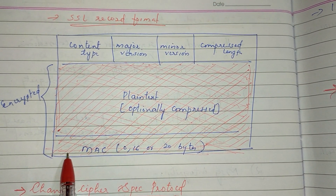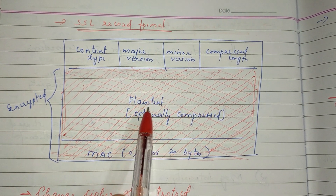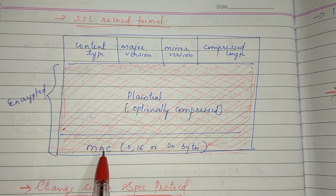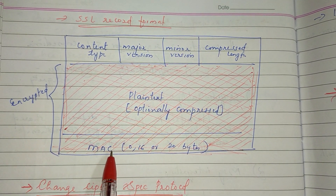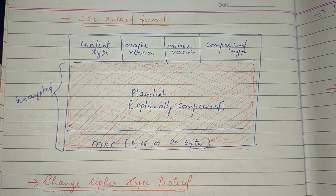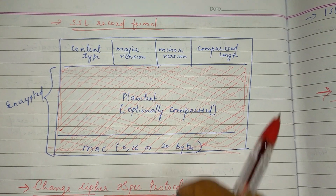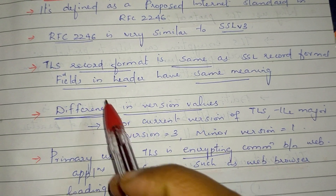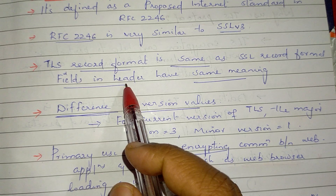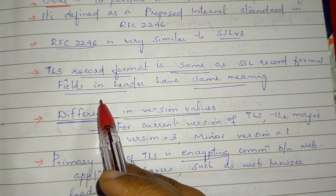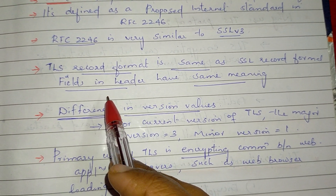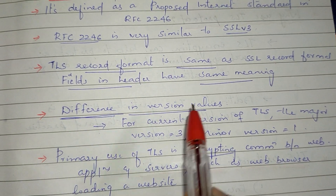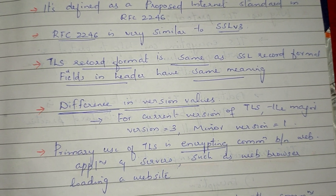The encrypted portion contains the plaintext, compressed version of the text, and the MAC, which is also encrypted. In TLS, the header field meaning is the same — content type, major version, minor version, and compressed length — but the version value is different.